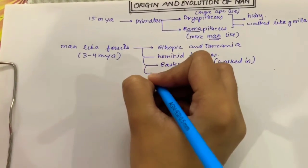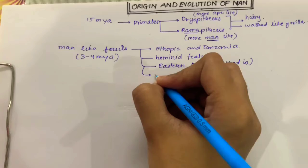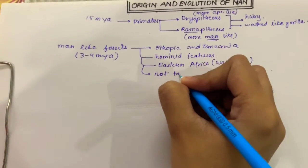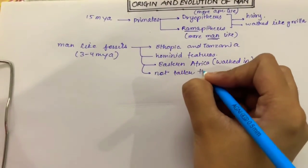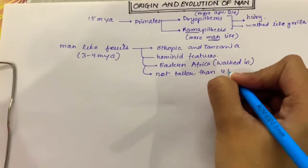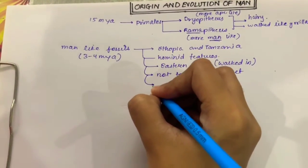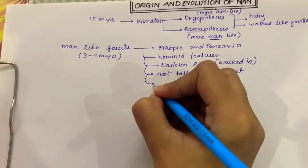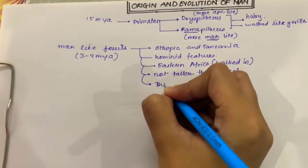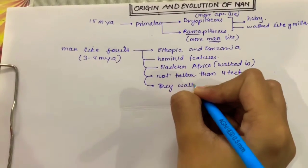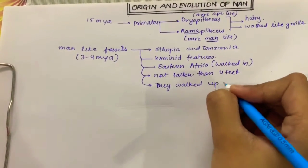They were not taller than 4 feet, but there was one positive point about them: they walked upright.